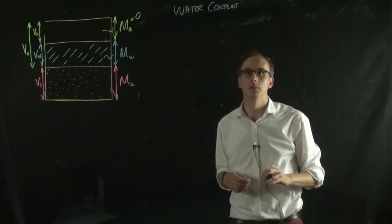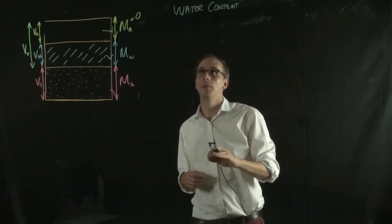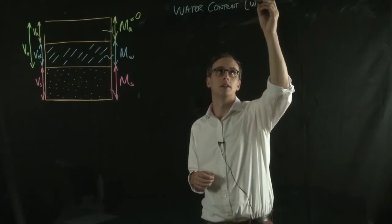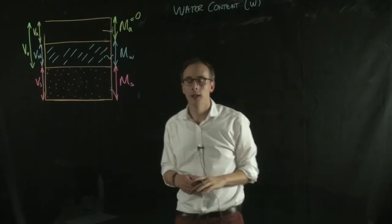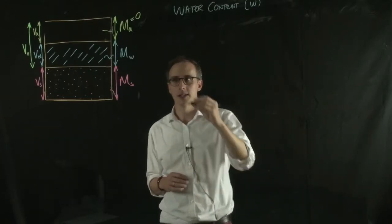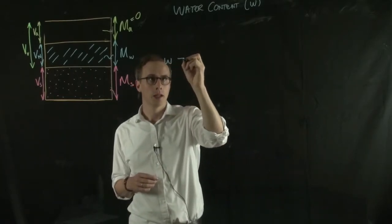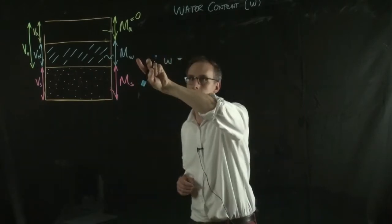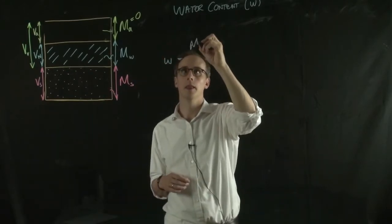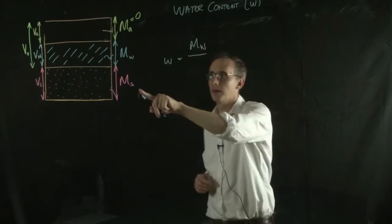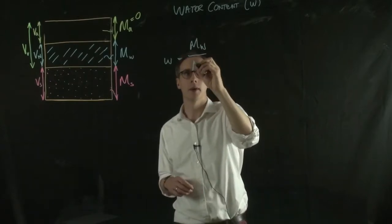Sometimes also described as the moisture content, it's given the symbol w. What the water content is, is the mass of the water, mw, divided by the mass of the solid, ms.